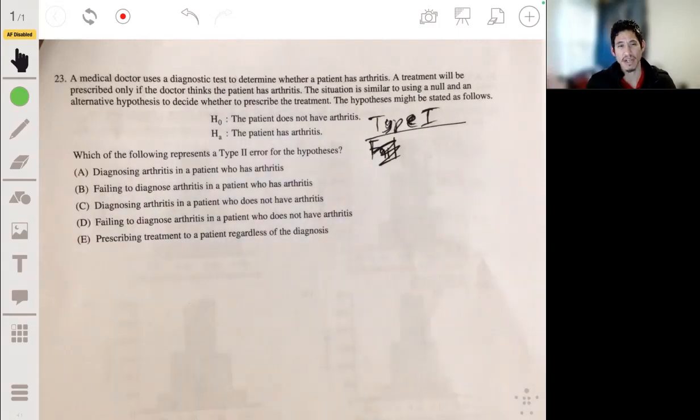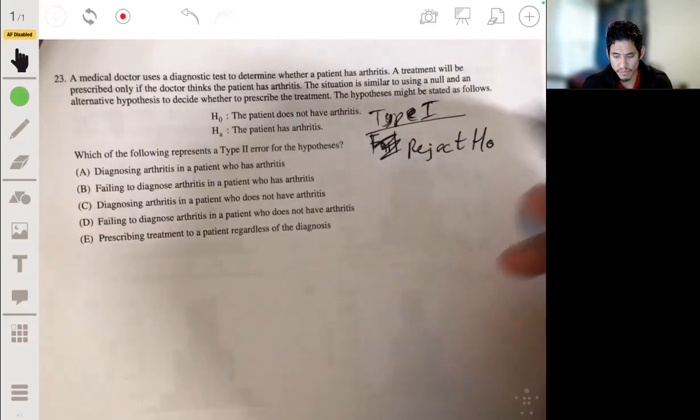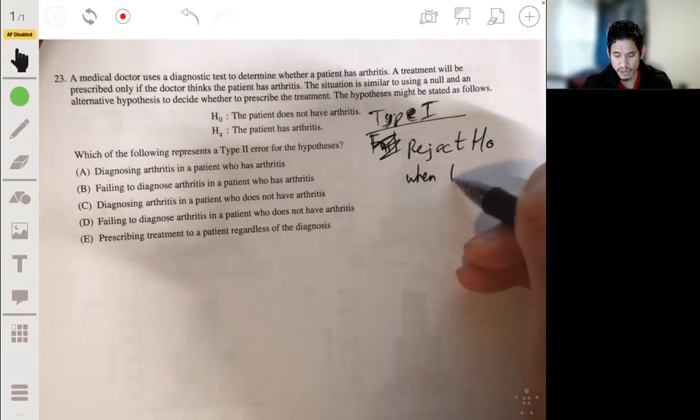Like you made a mistake. You rejected it, meaning you thought that the person has arthritis when they actually don't. So type 1 is reject H0 when H0 is true.